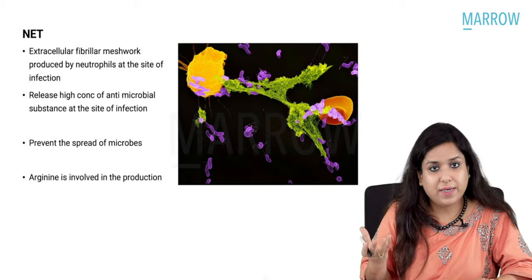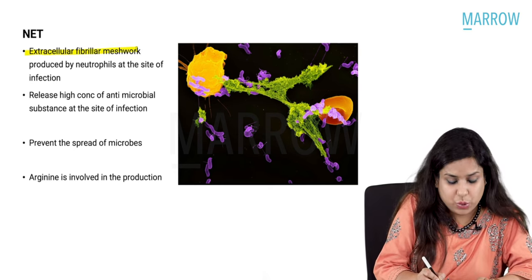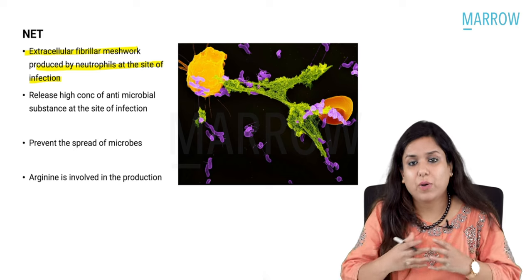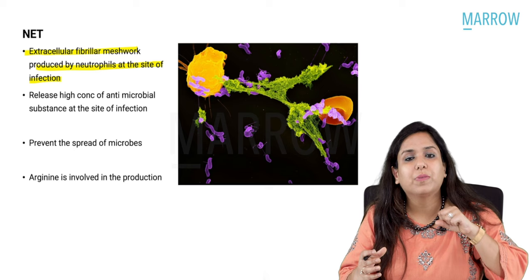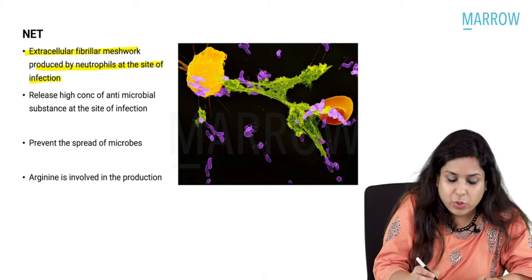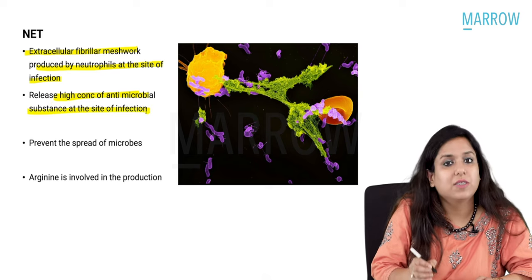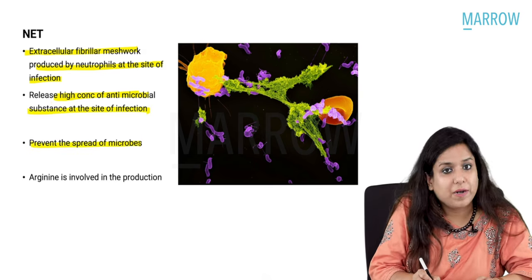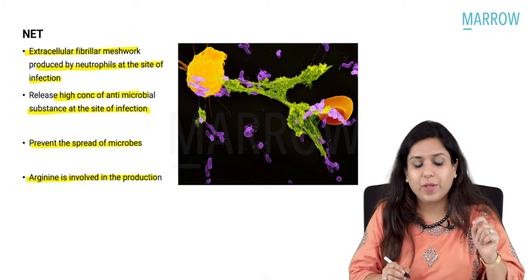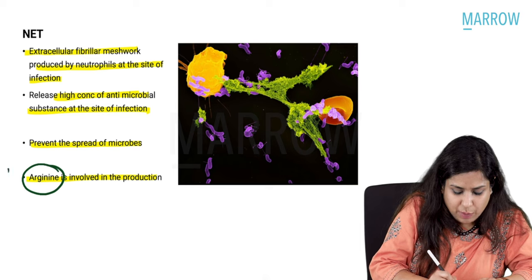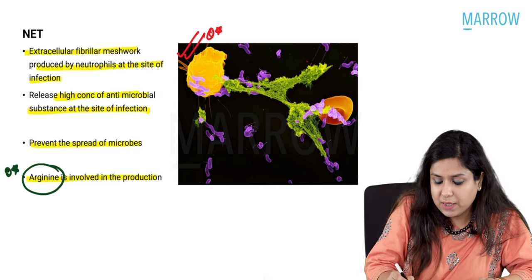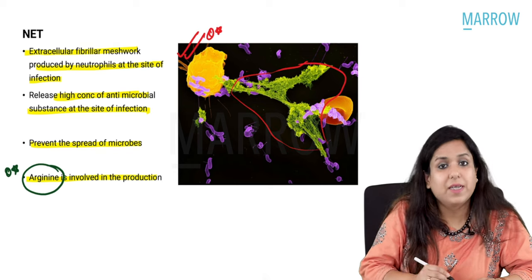What is a NET? It is basically an extracellular fibrillar meshwork produced by neutrophils at the site of infection. The basic purpose is to trap microorganisms so that infection cannot spread. It releases high concentrations of antimicrobial substances at the site of infection, prevents the spread of microbes, and arginine is the amino acid involved in its production. For future exams: which amino acid is involved in the production of NETs? Answer is arginine.